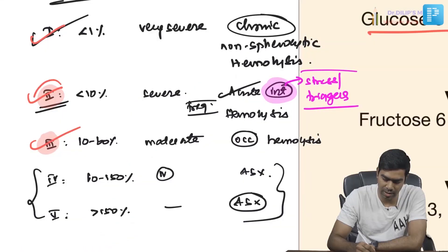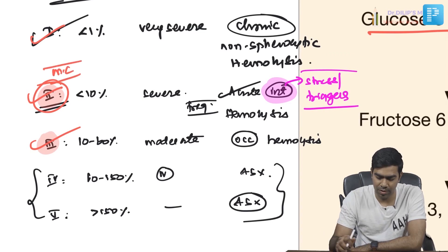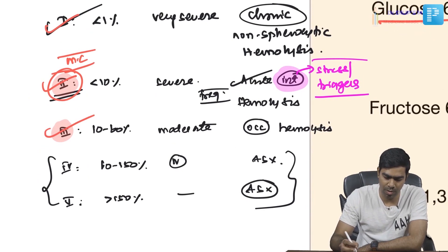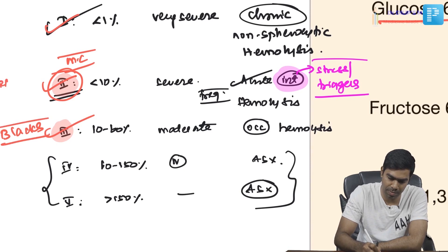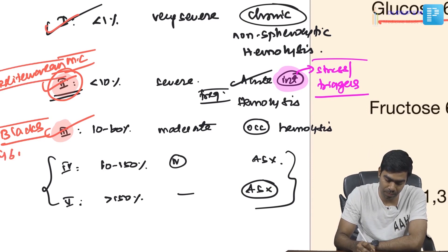Among the first three classes, the most common is Class 2, also called G6PD Mediterranean, which is very common in Mediterranean populations. Class 3 is common in Black/African-American populations and is called G6PD A-minus or G6PD Blacks. Overall, Class 2 is the most common variant worldwide.